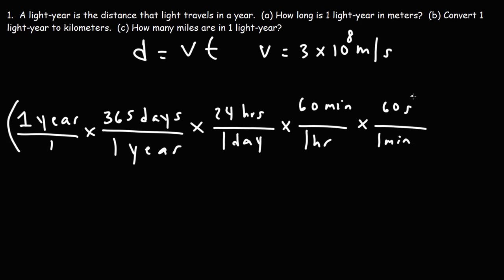So all of this right here, this represents T in this equation. All we've done is we've converted one year into seconds. Now, I'm going to multiply this by V, the speed of light.